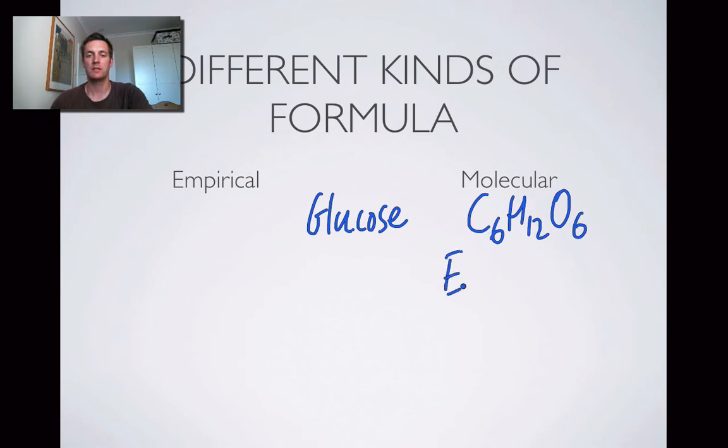So a molecular formula is the exact number of atoms in a molecule of a substance. So that we can cover ionic substances as well, instead of saying molecule we say in one repeating unit.